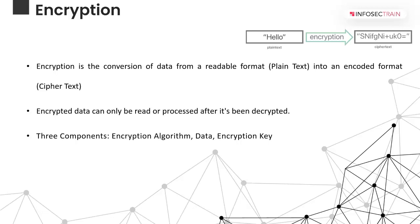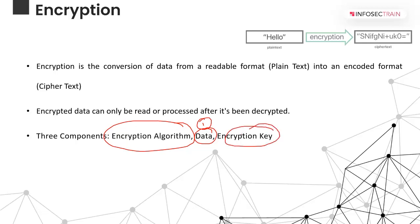If I have data which is completely encrypted, unless I decrypt the data I will not be able to read it. There are basically three components for encryption: first, the data which we want to encrypt; second, something called an encryption algorithm, or sometimes we call it an encryption engine; and third, an encryption key file. We use the encryption algorithm to transform our data into ciphertext.